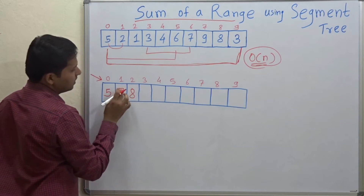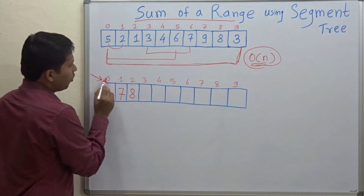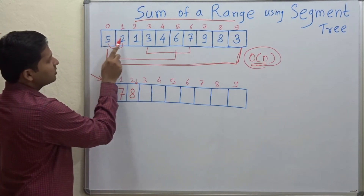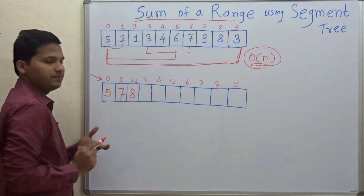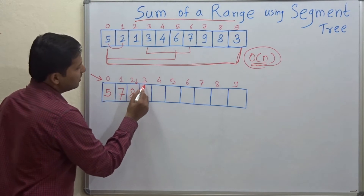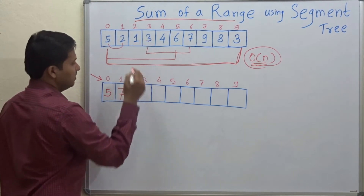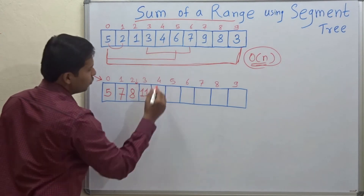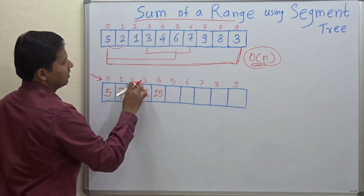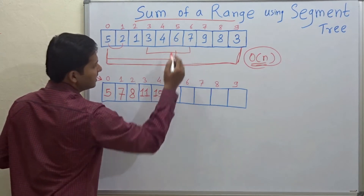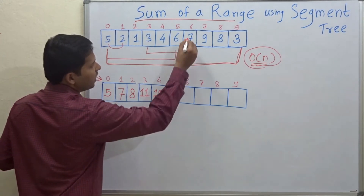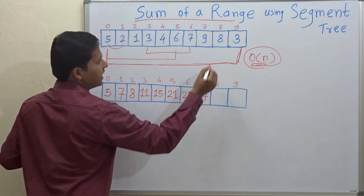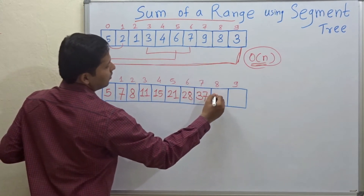At index 2 you store 7 plus 1, which is 8 — meaning the sum from 0 to 2 is 8. At index 3: 8 plus 3 is 11. Index 4: 11 plus 4 is 15. Index 5: 15 plus 6 is 21. Index 6: 21 plus 7 is 28. Index 7: 28 plus 9 is 37. Index 8: 37 plus 8 is 45.